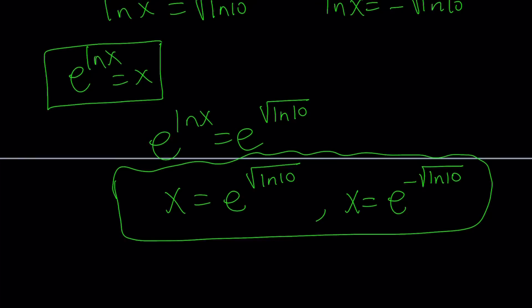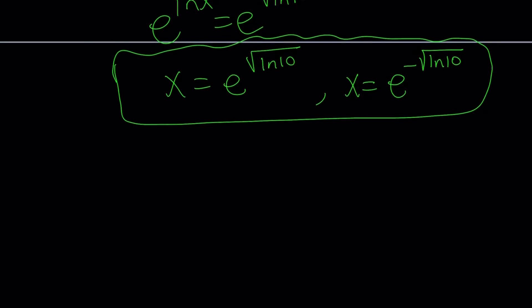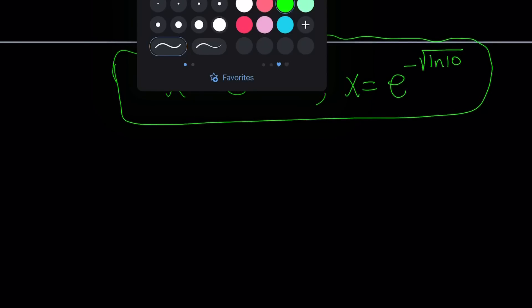So those are going to be the two solutions, and there are only two solutions to this equation. By the way, x mustn't be negative. x must be positive, and it is, because e to the power negative something. e to the power anything is positive, because e is positive, right? We have a positive base, so it's all good. Those are the two solutions, and let's go ahead and take a look at the second method.